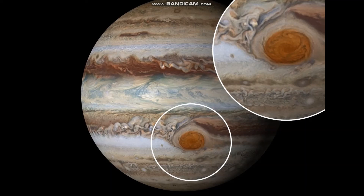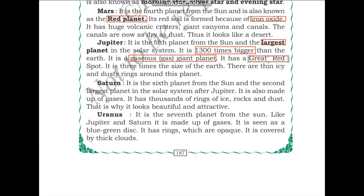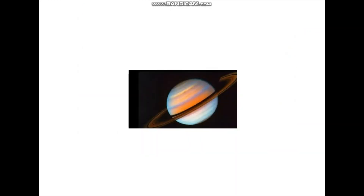Saturn is the sixth planet from the sun and the second largest planet in the solar system after Jupiter. It is also made up of gases and has thousands of rings of ice, rocks, and dust — that is why it looks beautiful and attractive. This is an image of Saturn showing its rings.